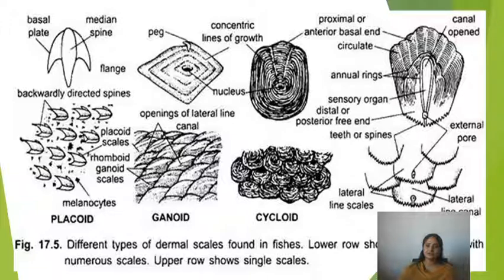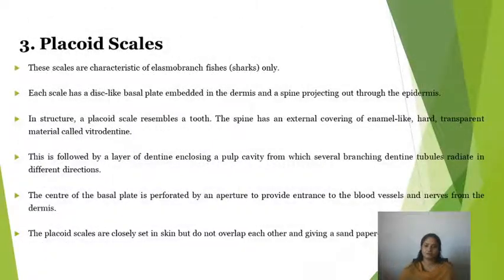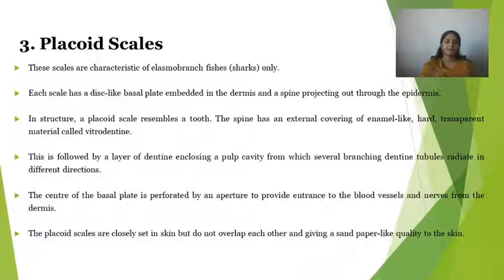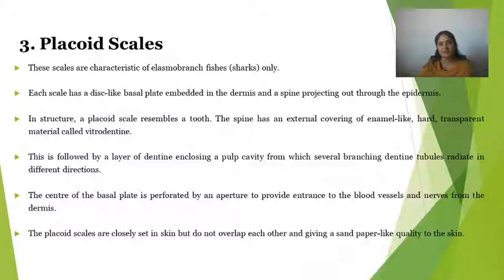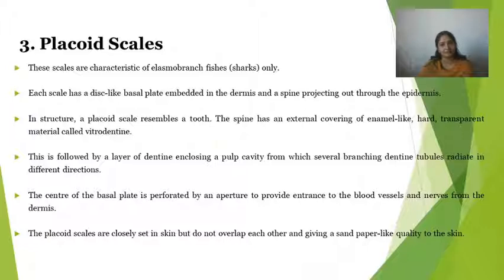Now coming to our main topic: Placoid scales. These scales are the characteristic features of Elasmobranch fishes and sharks only. Each scale has a disc-like basal plate embedded in the dermis and a spine projected out through the epidermis. It is made of two parts: a basal disc and a spine. The basal disc is embedded in the dermis, while the spine projects out of the epidermis.